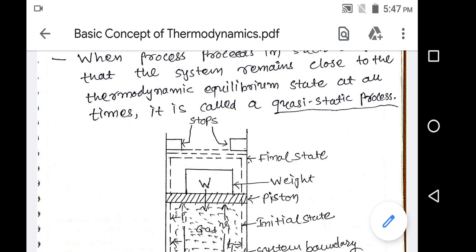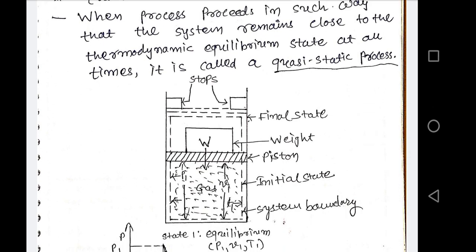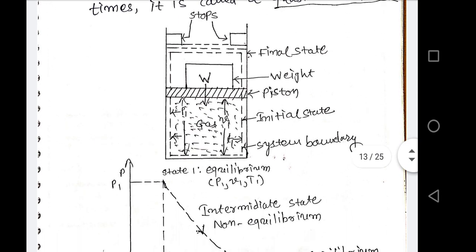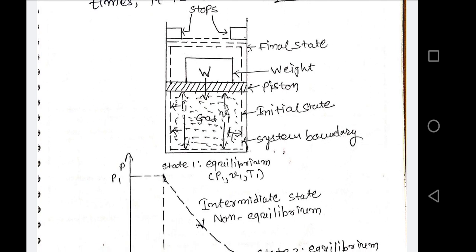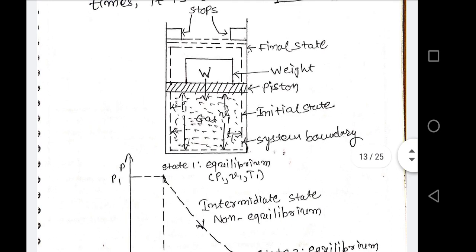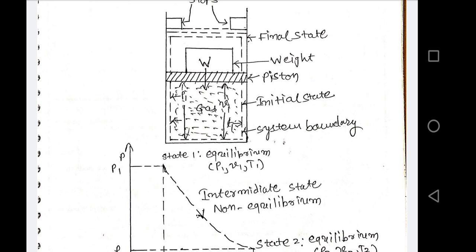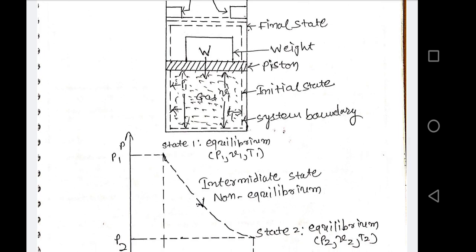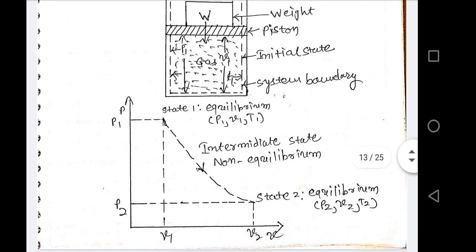Here one diagram is given showing a piston-cylinder mechanism. In this mechanism, there is one cylinder with one piston available inside it. On that piston, one weight W is provided. Due to the weight W, a downward force is applied due to gravity. The gas trapped inside the cylinder is compressed. In the initial condition, pressure is higher and volume is lower because the piston is at an intermediate position. So point 1 on the diagram is given as P1 and V1.